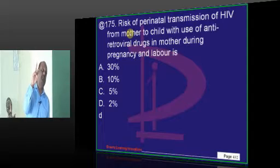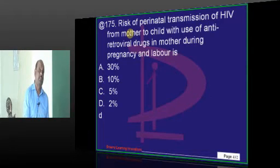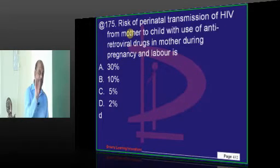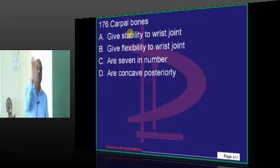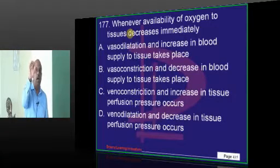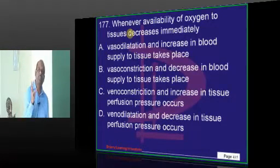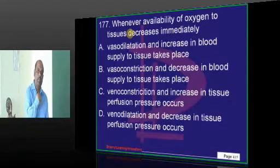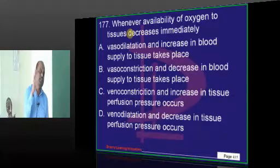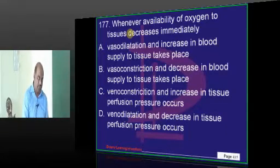Human papillomavirus vaccine is one question — you will remember me tomorrow when this question comes in the exam. 100% you have to be sure. Carpal bones mainly give stability to the wrist joint. Then, whenever oxygen is low — hypoxia — what is the response of systemic circulation? Vasodilation. Response of pulmonary circulation is vasoconstriction.